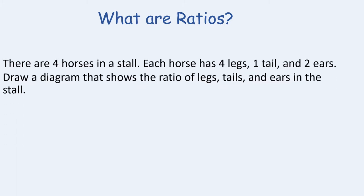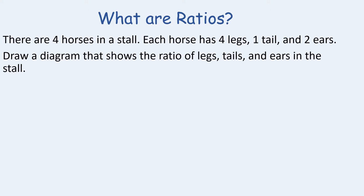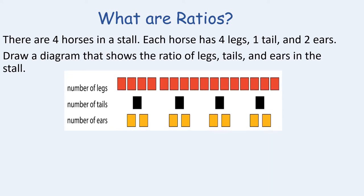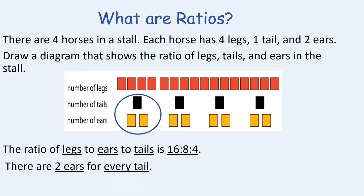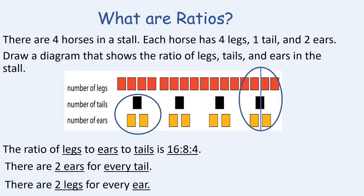Here's an example of how to use ratios. There are four horses in a stall; each horse has four legs, one tail, and two ears. Draw a diagram that shows the ratio of legs to tails and ears in the stall. From the diagram, the ratio of legs to ears to tails is 16 to 8 to 4. There are two ears for every tail, and there are two legs for every ear — since a horse has four legs, cutting everything in half gives two legs for every one ear.